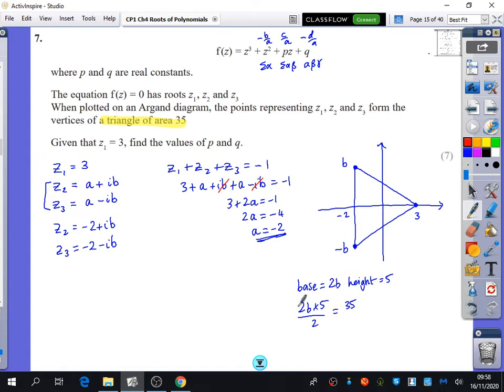And so we know that base times height divided by 2 is equal to 35. The 2s cancel. So 5b is 35. And so b is equal to 7. That's what you all got, right?